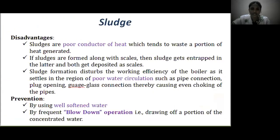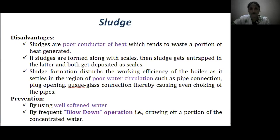What are the disadvantages of sludges? They are poor conductors of heat, which tends to waste a portion of heat generated in the boiler. If sludges form along with scales, they get entrapped in the scale deposits. Sludge formation also disturbs the working efficiency of the boiler by obstructing water circulation, causing choking of pipes. Sludges can be prevented by using well-softened water and by the blow-down operation — that is, withdrawing a portion of concentrated water and replacing it with fresh water.